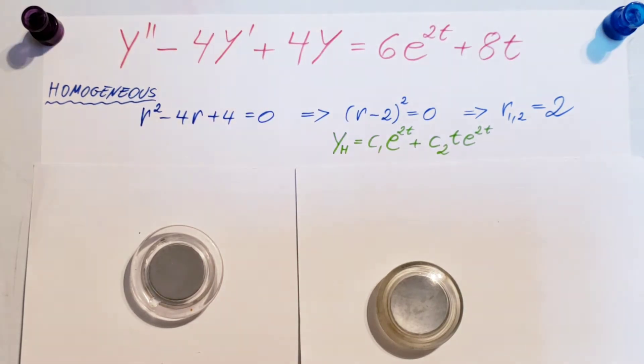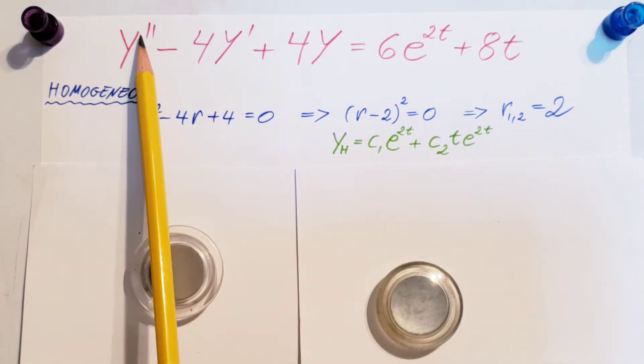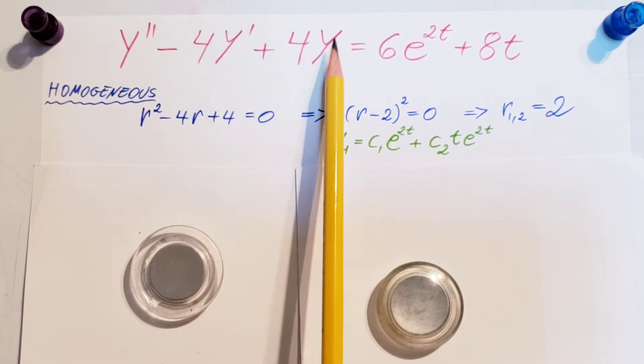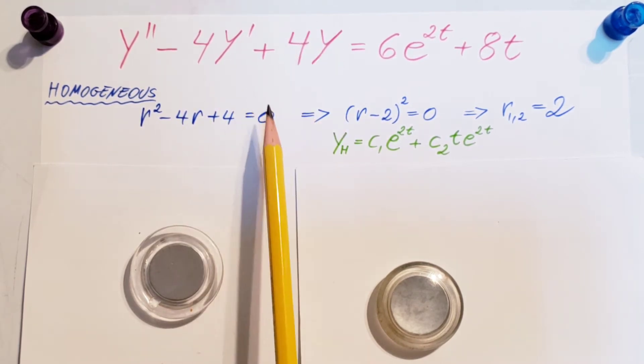First, let's work on the homogeneous part where we take this, put it equal to 0, and write up our characteristic equation. So, r squared minus 4r plus 4 equals 0.